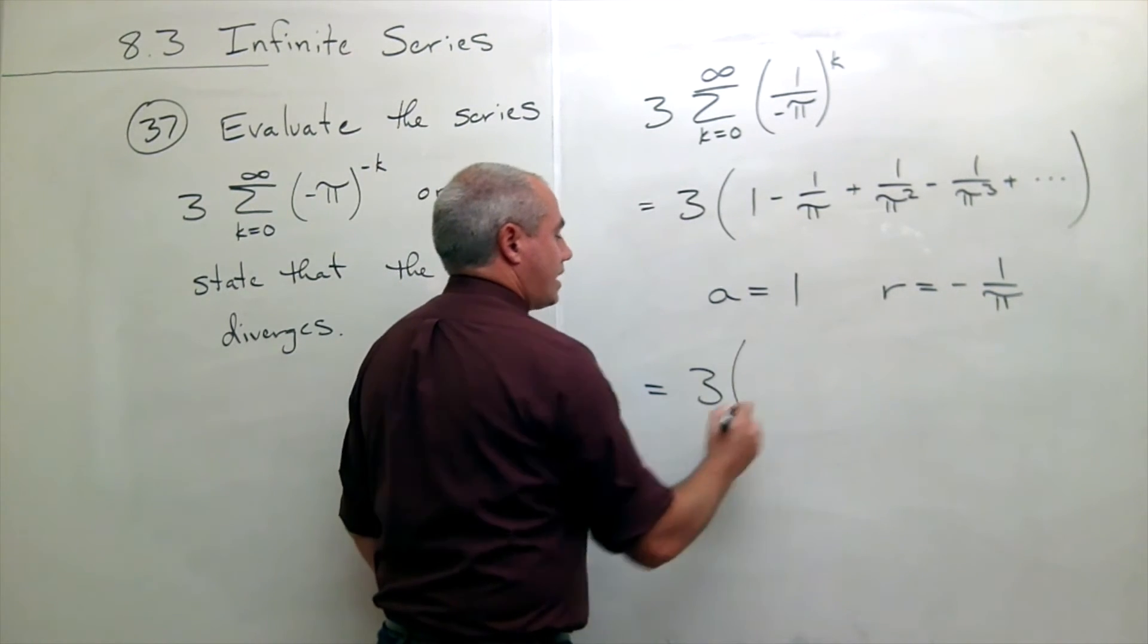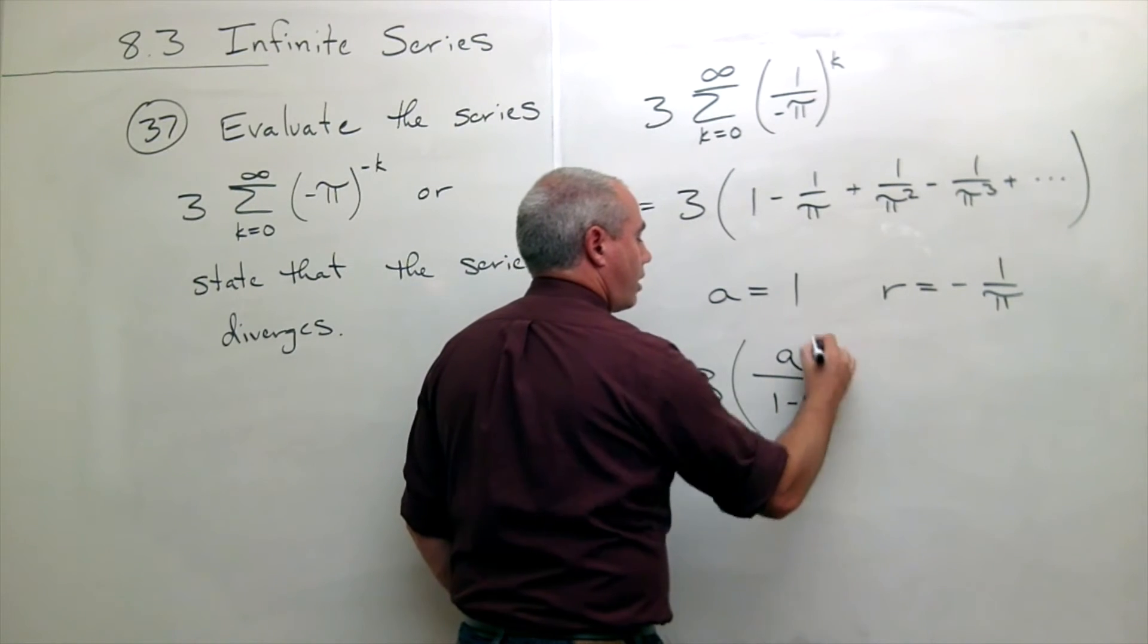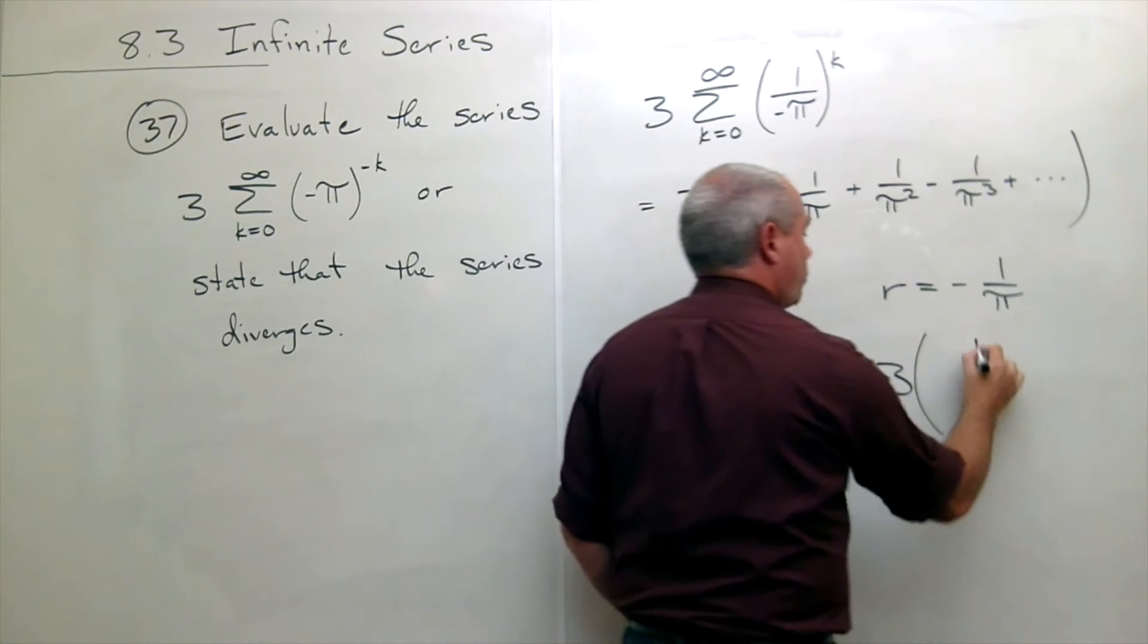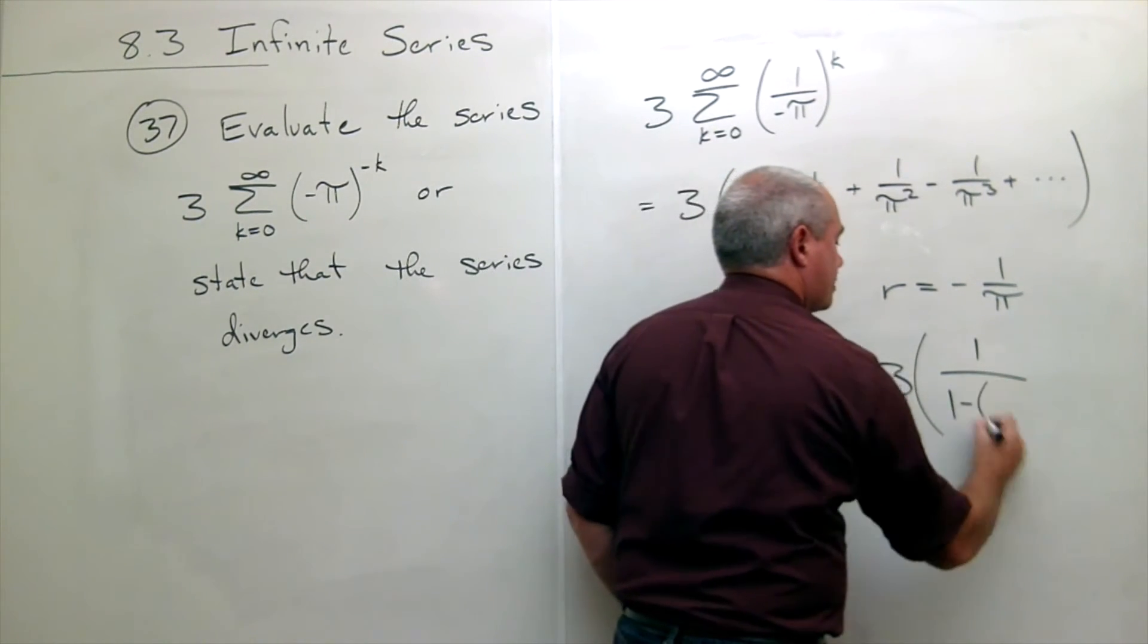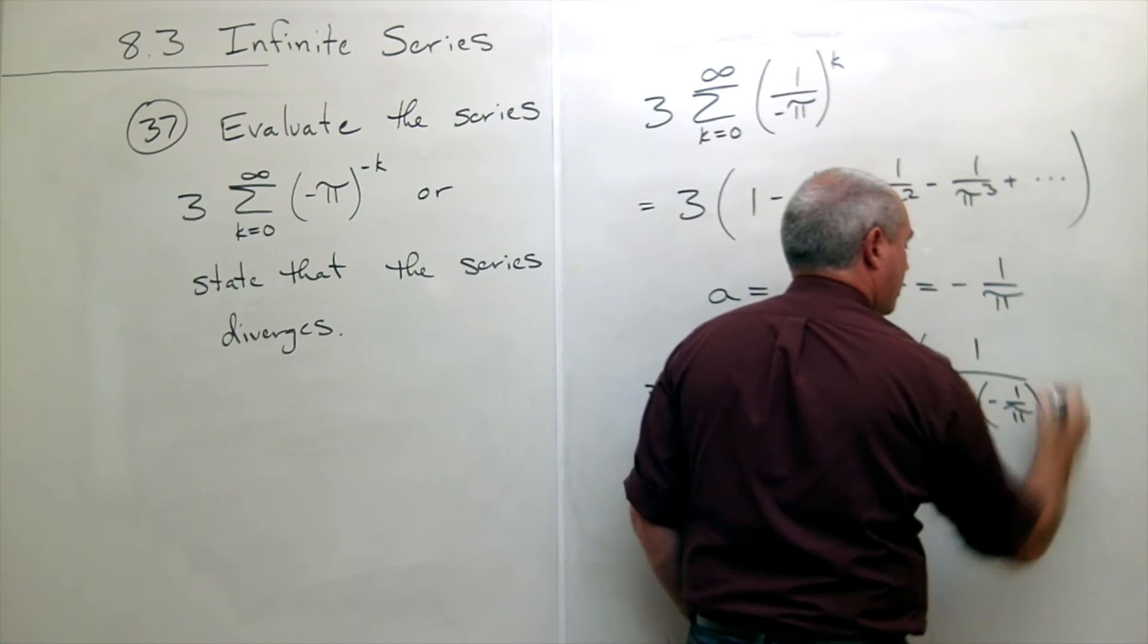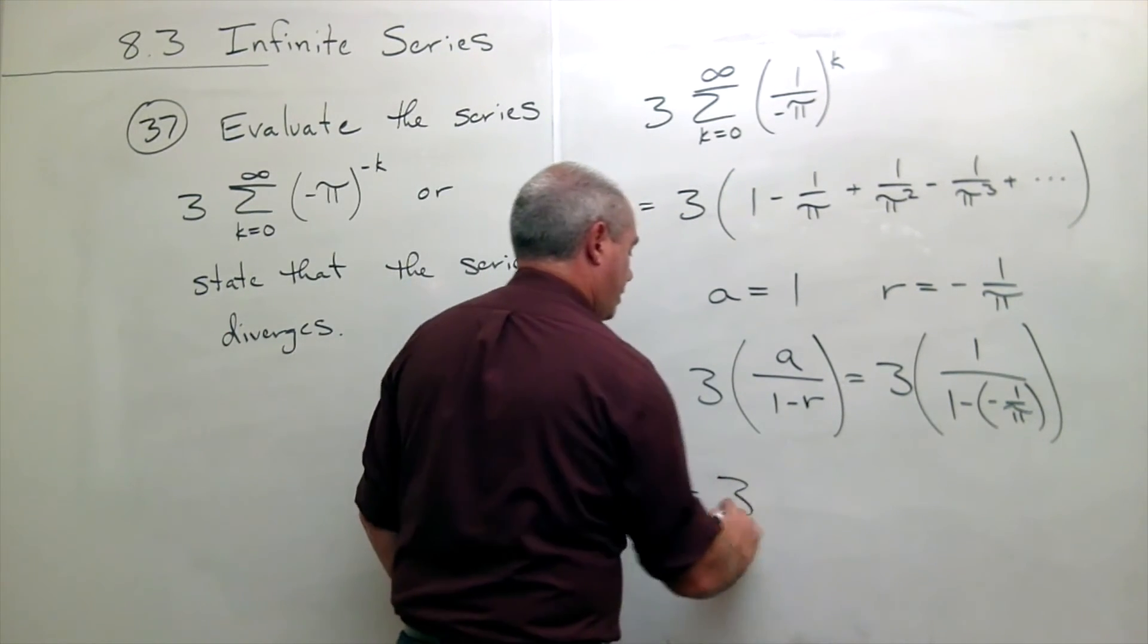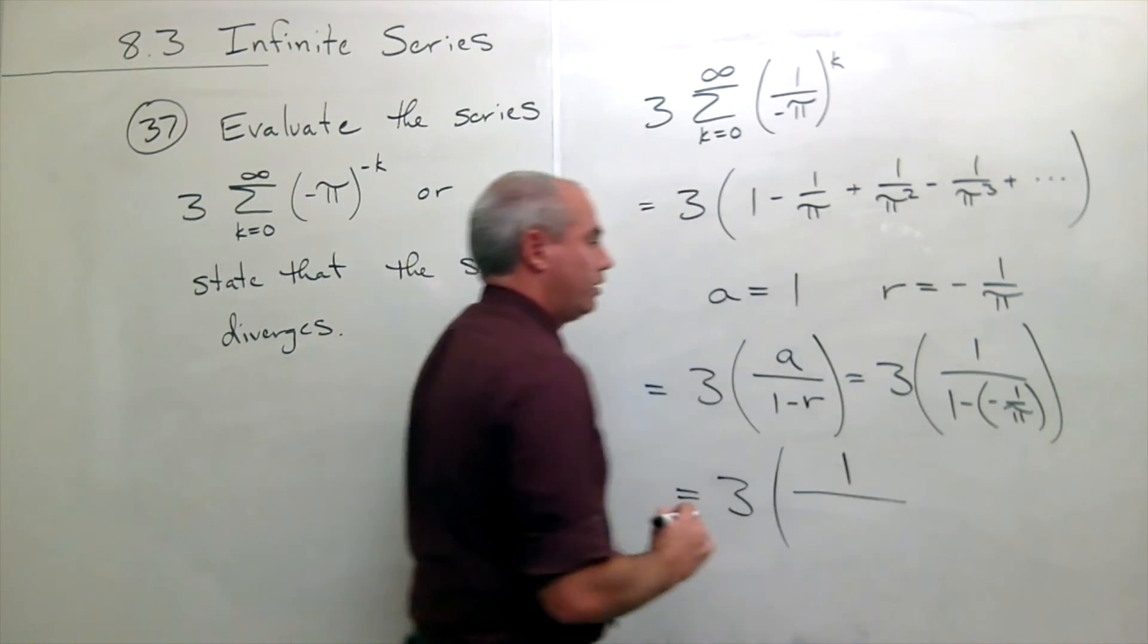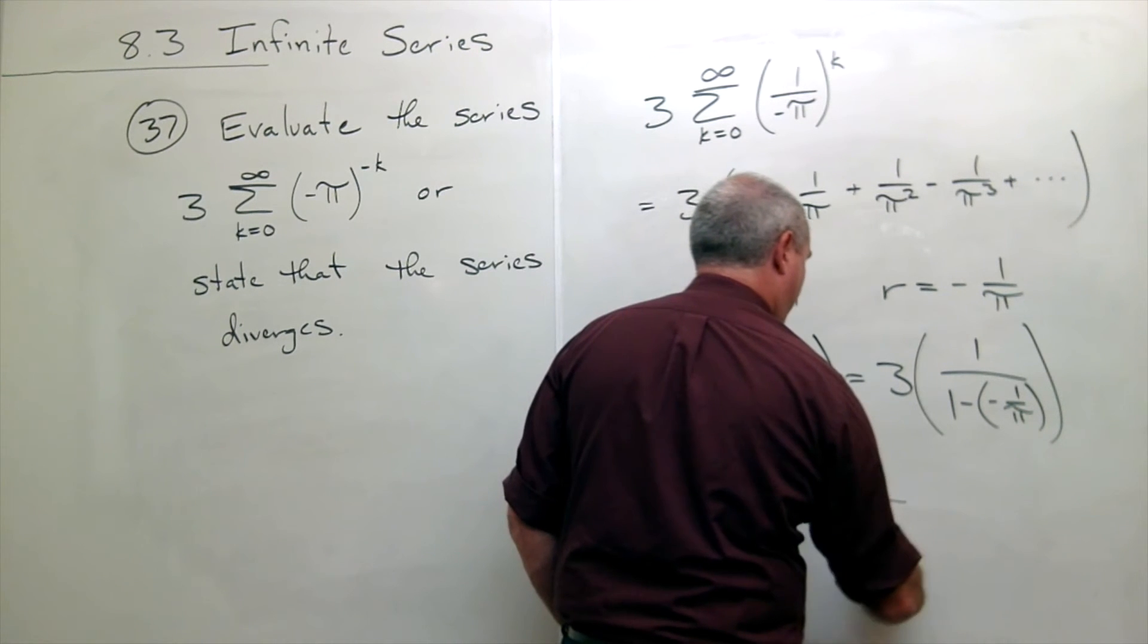This is going to be 3 times, well it's a over 1 minus r. In other words it's 3 times a which is 1 over 1 minus r, r is negative 1 over π.